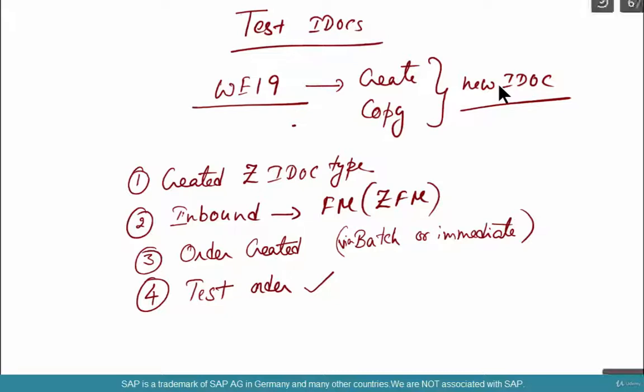You create a custom IDOC. Go to WE19, create your own IDOC, run your inbound program, create your order via the batch or immediate process, test the order, and then ensure that the tested order matches with the data in your IDOC.